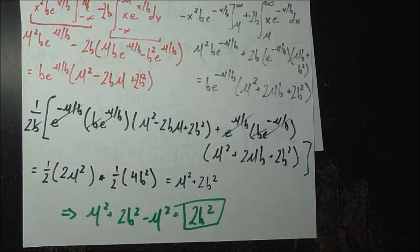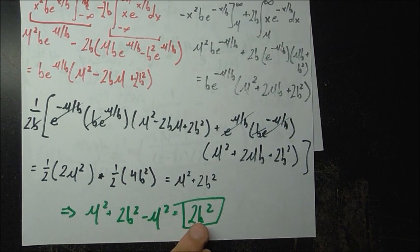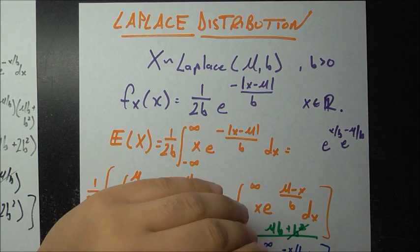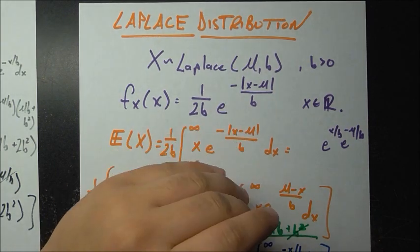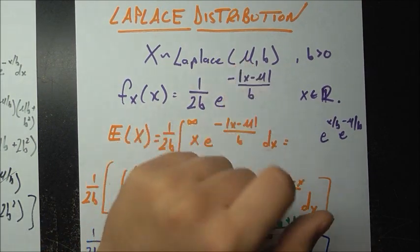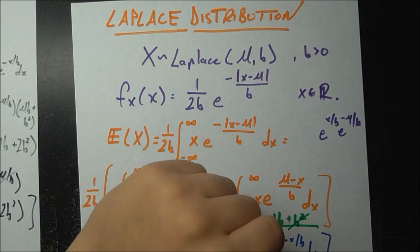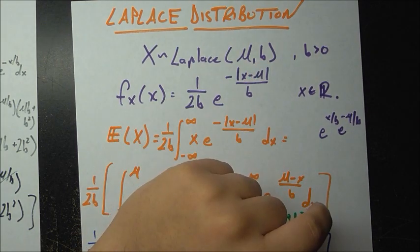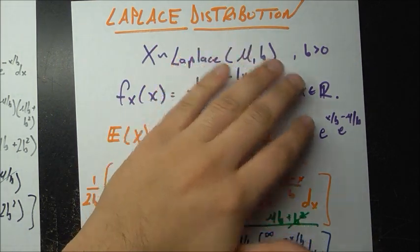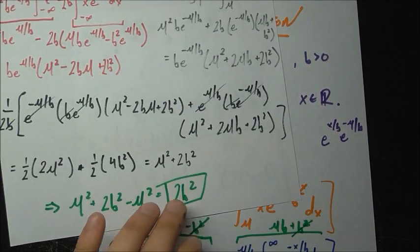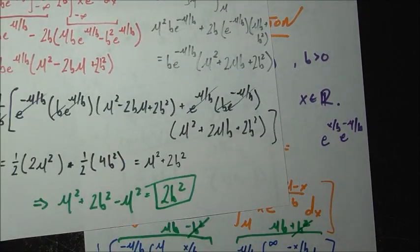Similar to the normal distribution, the expected value depends only on the first parameter — in fact it equals the first parameter — and the variance depends only on the second parameter. But unlike the normal distribution, the variance is not just the second parameter itself; it is a function of the second parameter, namely 2 times b squared.